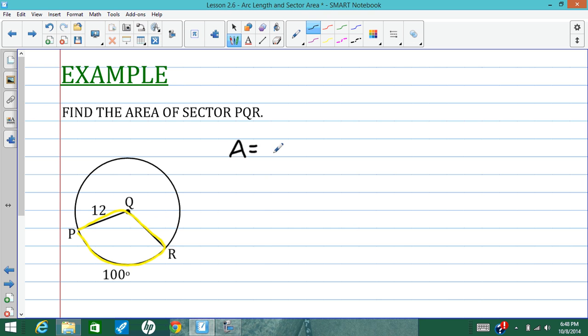So we'll start with the formula here. The area is the measure of the arc we're talking about. So in this case, arc PR over 360 times pi R squared. And we can plug in, arc PR is 100. And the radius is 12.